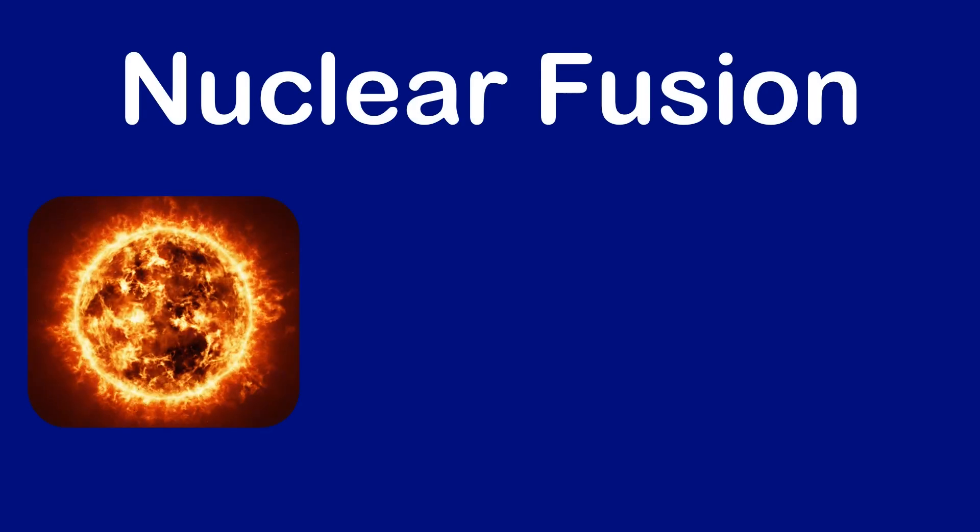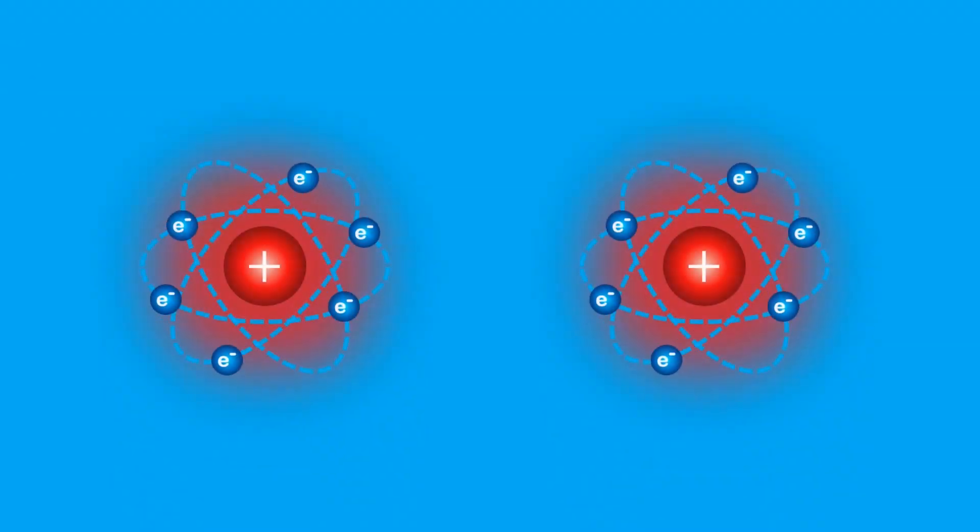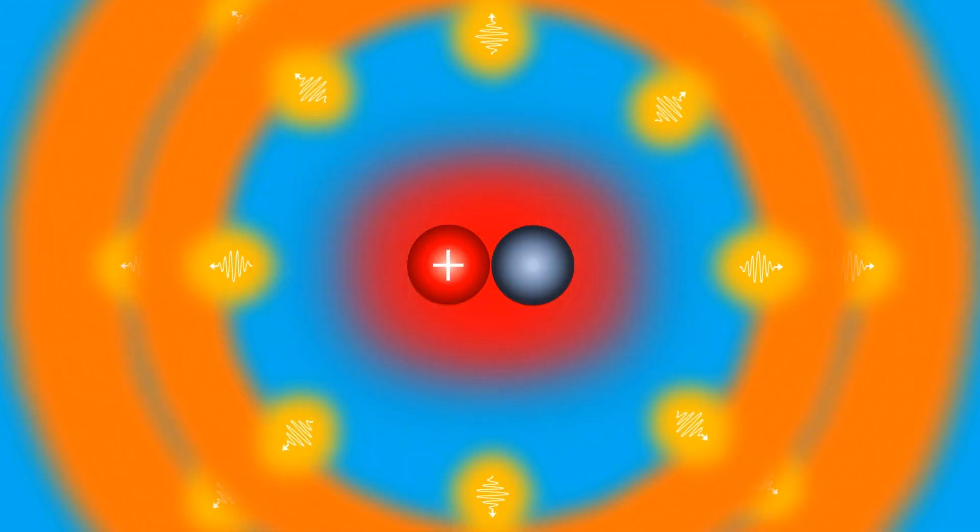Nuclear fusion powers the sun, atom bombs, and may one day generate electricity. It happens when the nuclei of two atoms fuse to make a heavier nucleus, releasing a lot of energy.